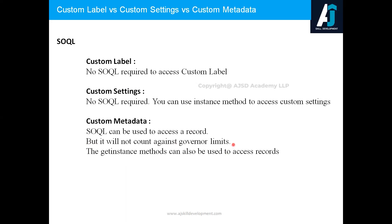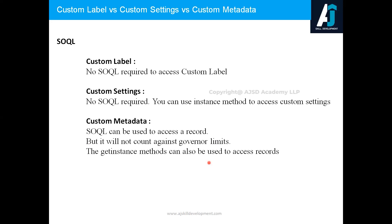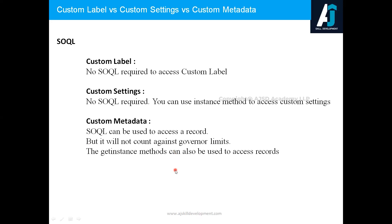Salesforce enforces governor limits due to its multi-tenant architecture, to ensure effective resource usage. For example, you can issue 150 SOQL queries per transaction. If you have five SOQL queries to get data from custom metadata, those five will not count against the governor limits — that is the advantage of custom metadata. Without SOQL, you can also access custom metadata these days.